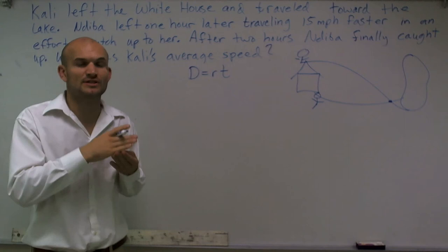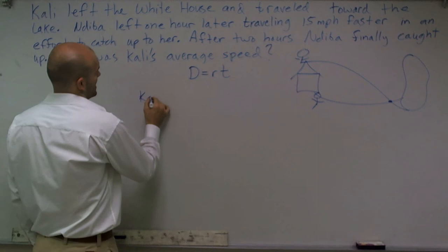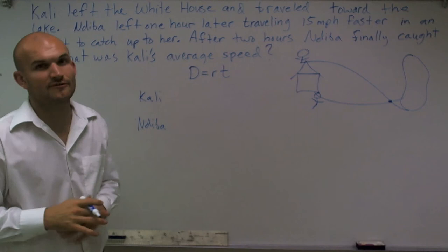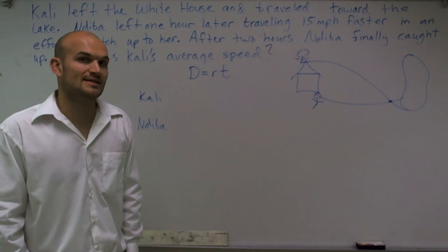So what I'm going to do is I notice that I have two different people with two different distance rate times equations that I can set up. The first one I'm going to set up is Callie, and then I have Nadeeba. Now I'm going to try to fill in as much information as I possibly can using the formula distance equals rate times time for both of them.